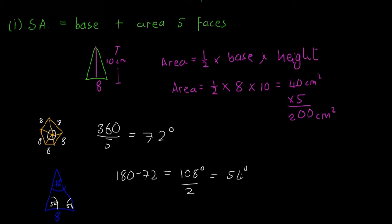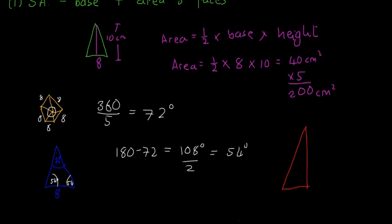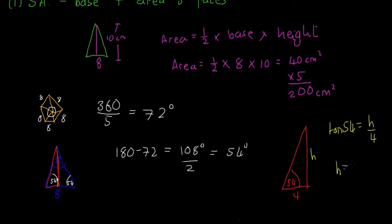We have 8 on the bottom, 72 on top, 54 and 54 on the base angles. I'll draw just half of this triangle — a red line cuts it down the middle — giving us a right triangle with angle 54, base 4, and unknown height. Using trigonometry: tan(54) = opposite/adjacent = h/4, so h = 4 × tan(54), which gives us h = 5.51 centimetres.